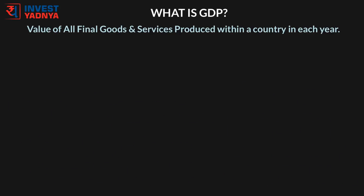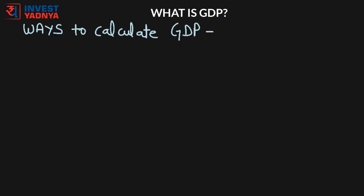Now hopefully you understand what GDP is and how the GDP number tells us the size of a country's economy. We will now look at the various ways to calculate GDP. Majorly there are two approaches.